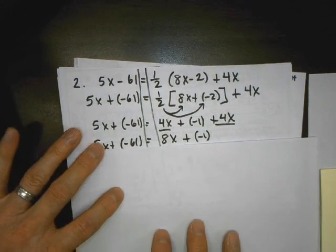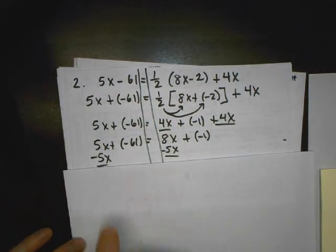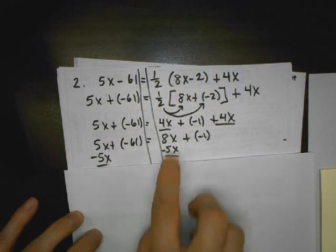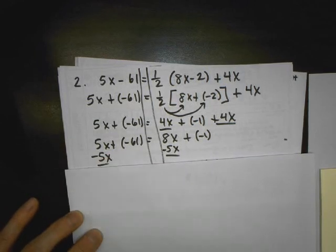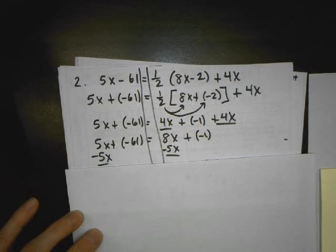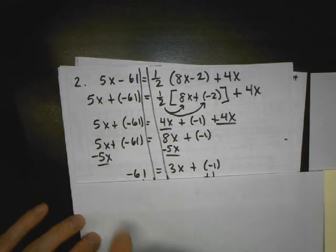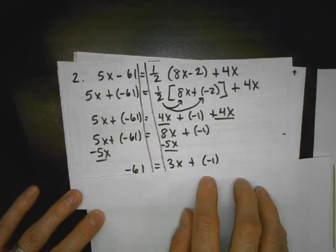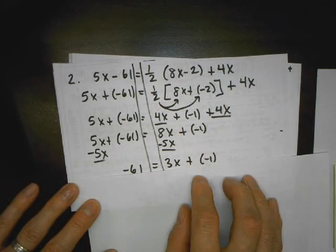Now that I've simplified both sides, now I get my variable on one side. I can subtract 5x. And when I start moving stuff to the other side, that's when I do the opposite of what I see. So if I see positive 5x, I subtract 5x from both sides. That gets rid of my x's on one side. I have all my x's on the right side because 8x take away 5x is 3x.